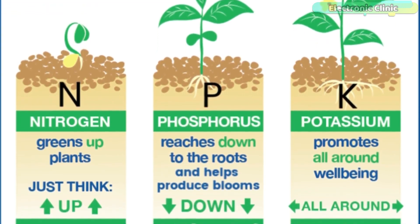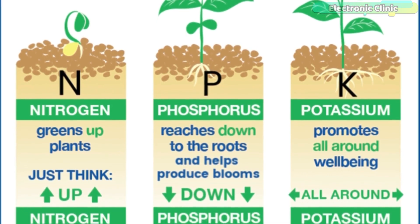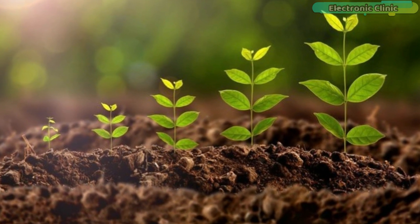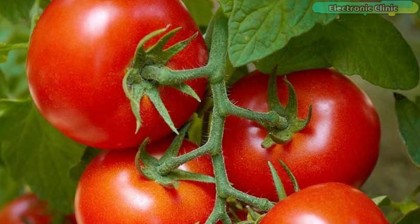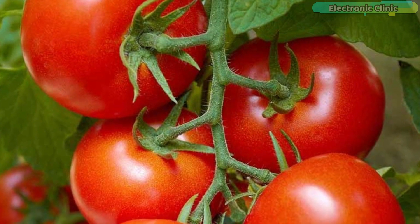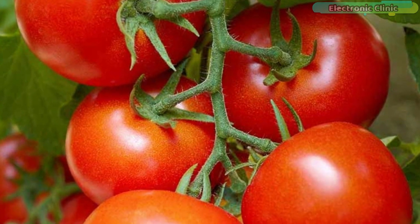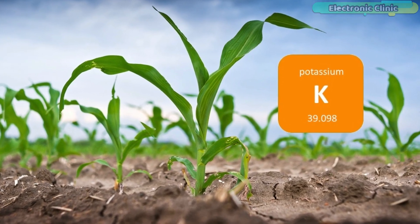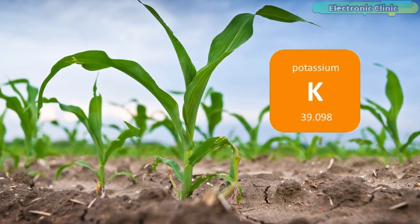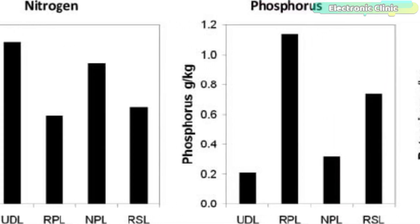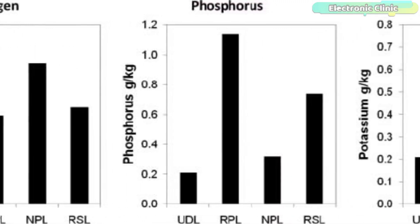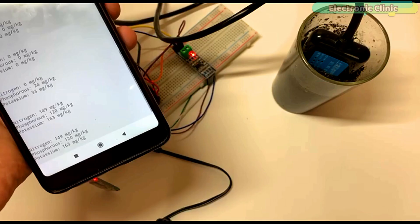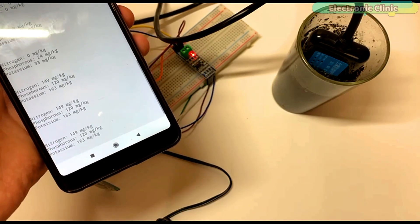Nitrogen, phosphorus and potassium are really important to soil because nitrogen is used by plants for lots of leaf growth and good green color. Phosphorus is used by plants to help form new roots, make seeds, fruits and flowers. While potassium helps plants make strong stems and keep growing fast. A certain level of soil nutrients like nitrogen, phosphorus and potassium should be maintained in the soil, which is only possible if you know how to measure these three elements.